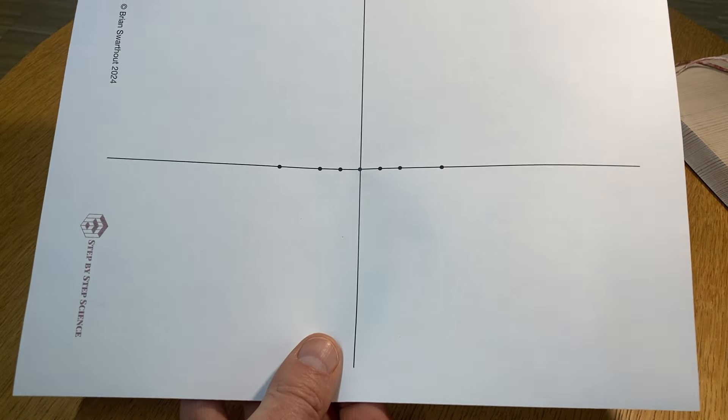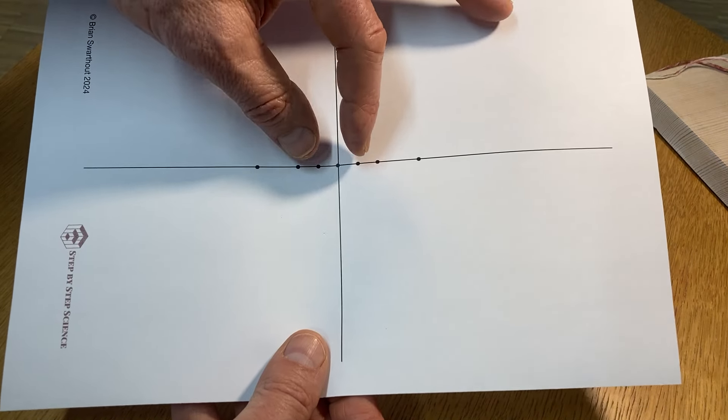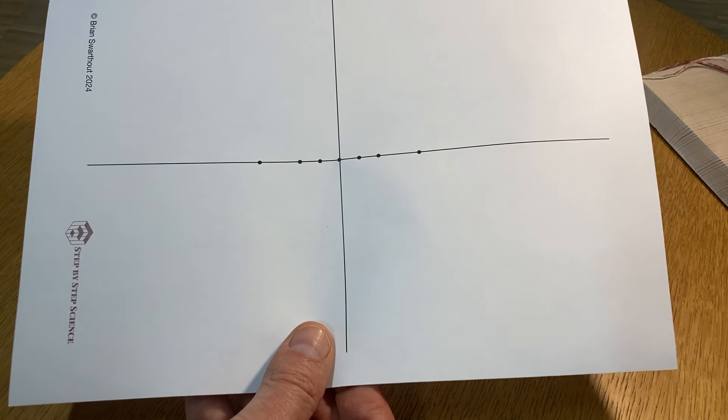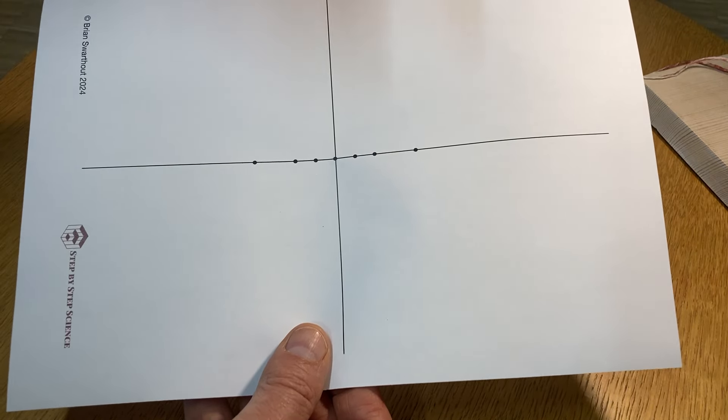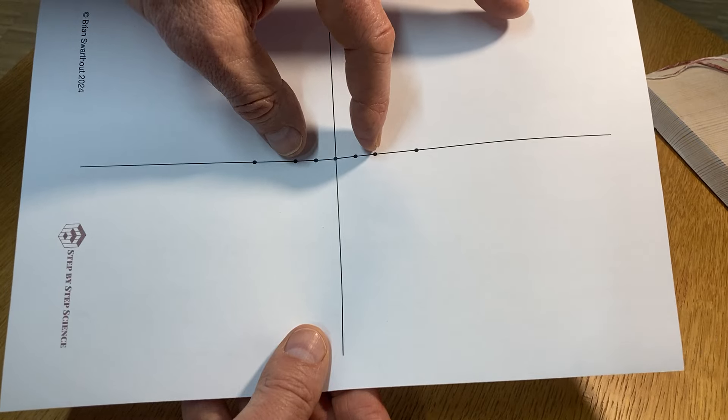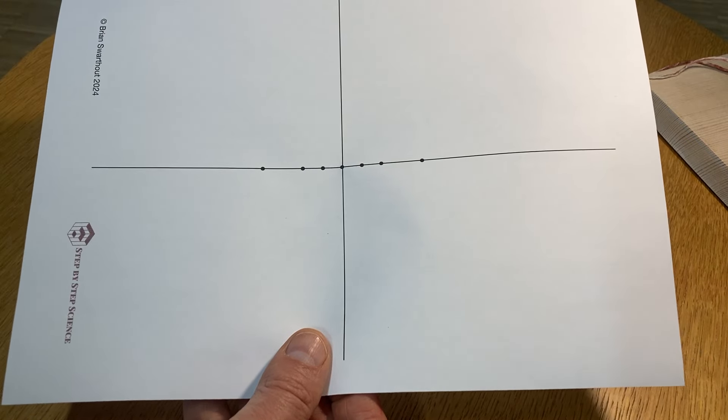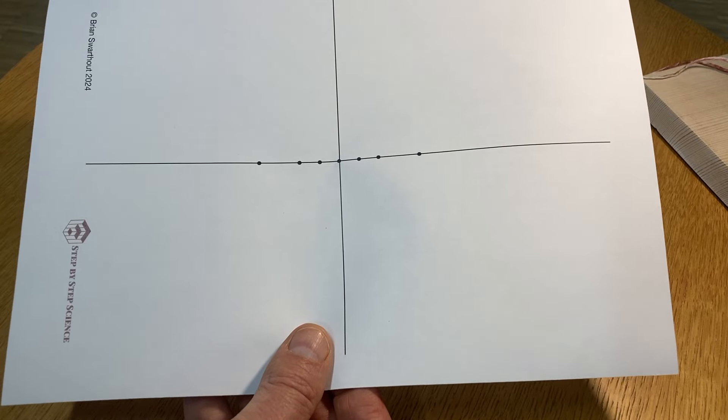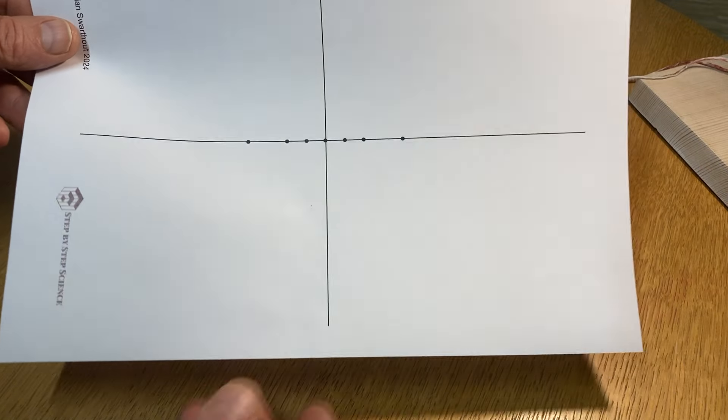As it says in the instructions, I'm going to make two dots that are each one centimeter away from the center of the paper. Those are the foci for the first ellipse. For the second ellipse I made the two dots two centimeters away from the center, and for the third ellipse they need to be four centimeters away from the center of the ellipse.